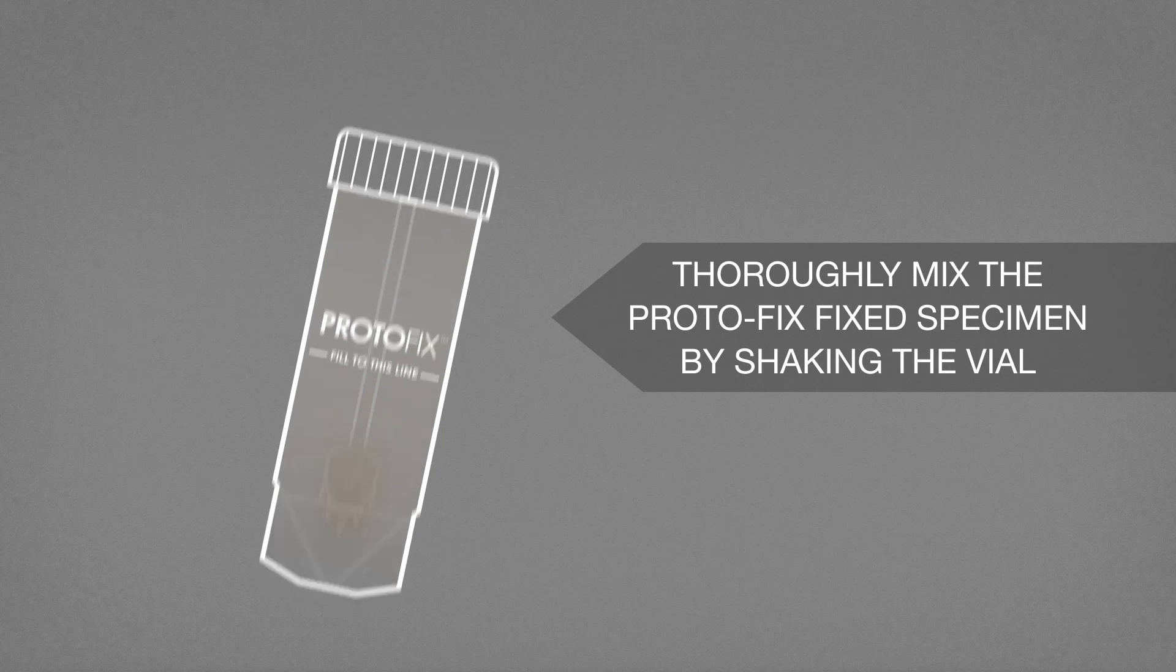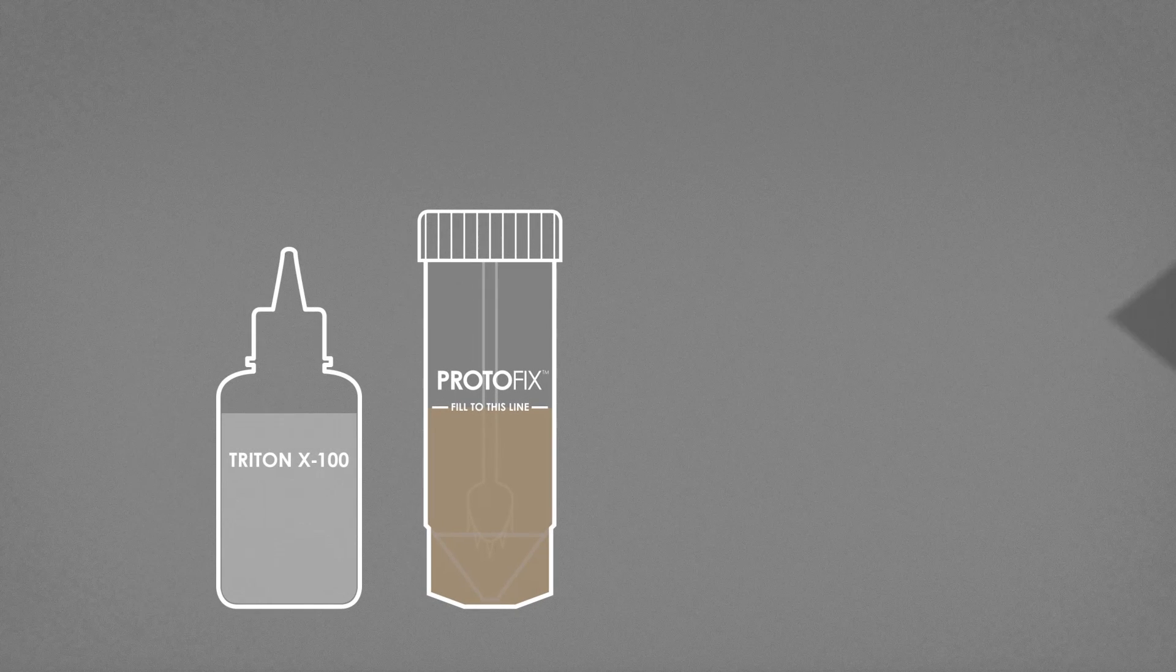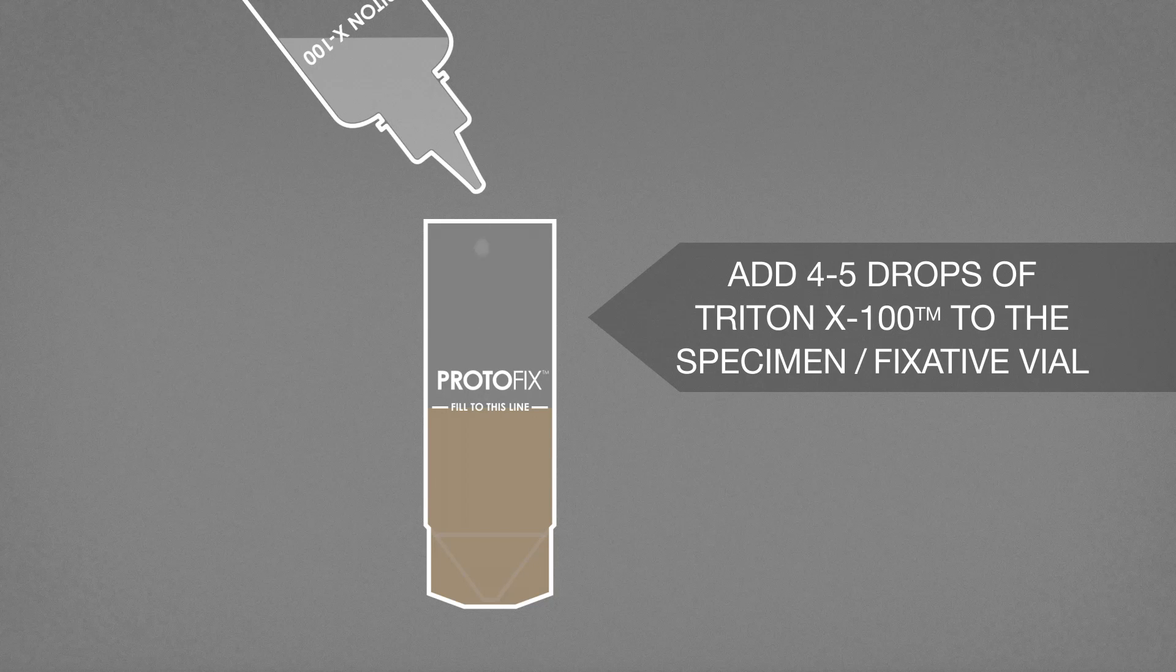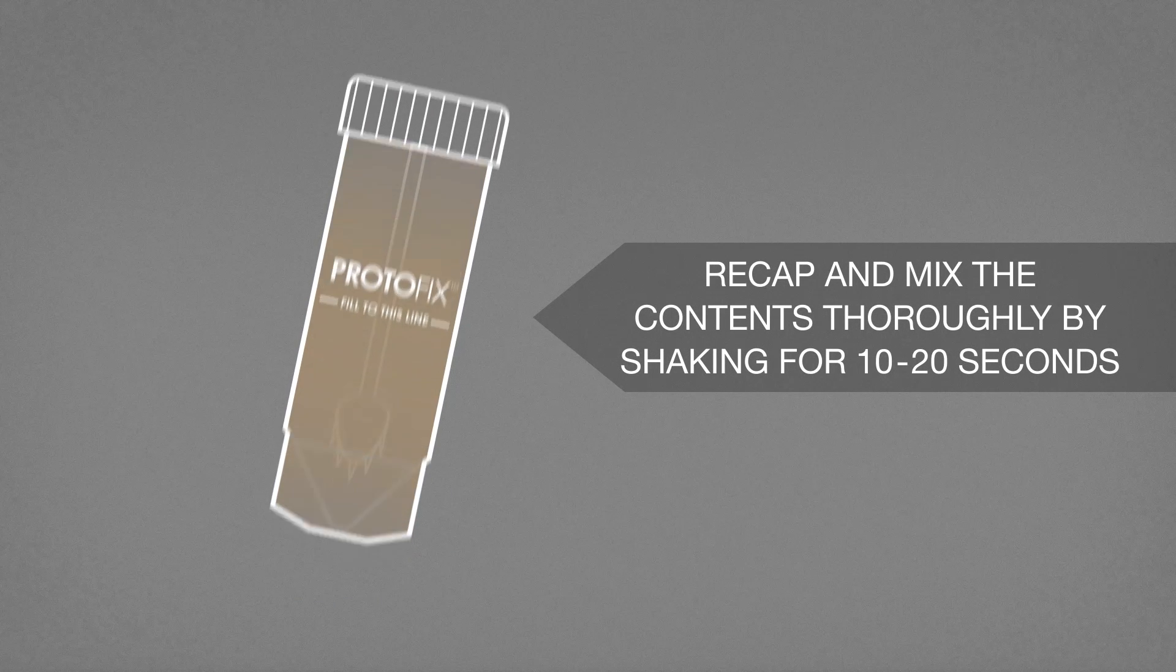Thoroughly mix the Protofix specimen by shaking the specimen fixative vial. Add four to five drops of Triton X100 to the specimen fixative vial. Recap and mix the contents thoroughly by shaking for 10 to 20 seconds.